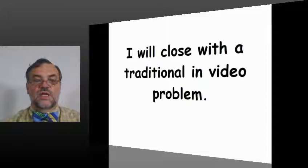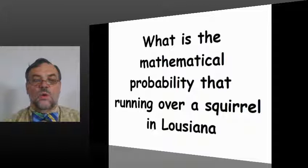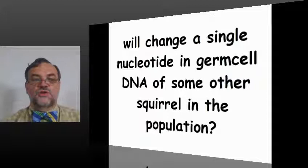I will close with a traditional in-video problem, traditional for those of you who have taken this course. What is the mathematical probability that running over a squirrel in Louisiana will change a single nucleotide in germ cell DNA of some other squirrel in the population?